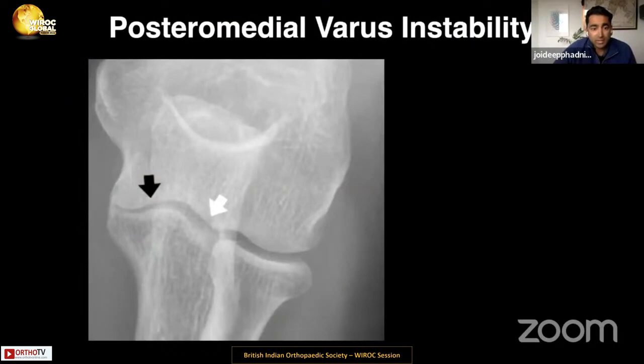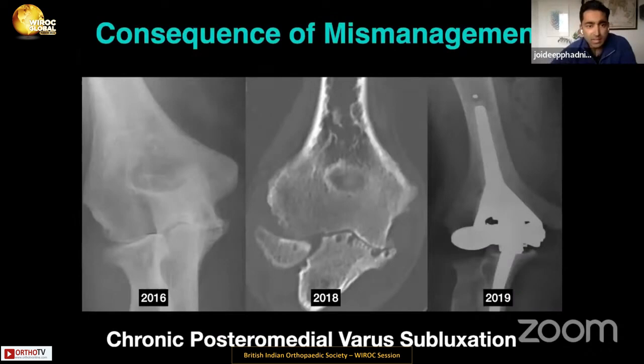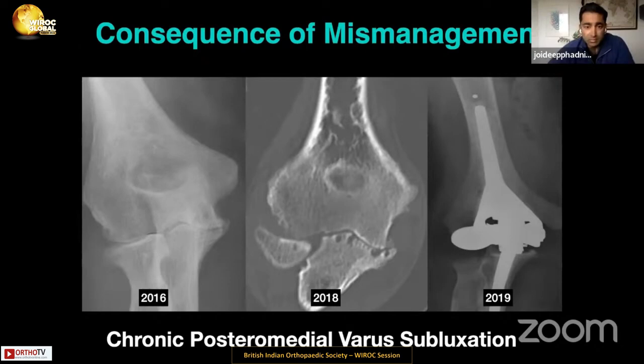This can be seen or inferred on static radiographs, where you get a delta-type sign with widening of the lateral joint line — and remember, there is a lateral collateral ligament injury. This is a particularly malignant injury pattern because chronic posteromedial varus subluxation can lead to rapid arthritis in some situations. When this occurs, there aren't many options for treatment, one of which might be a total elbow replacement.